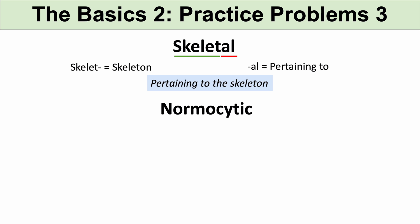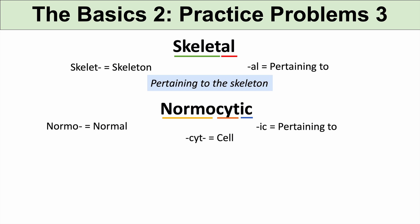The next word is normocytic. Normo — you can think of words like normal — means normal. Cyte means cell, and the suffix ic means pertaining to. So normocytic means pertaining to normal-sized cells. We can think of conditions like normocytic anemia, an anemia where the cells are normal in size.